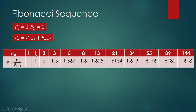For example: 1 over 1 is 1; 2 over 1 is 2; 3 over 2 is 1.5; 5 over 3 is 1.667; 8 over 5 is 1.6 — and so on. By the time you get to 144 over 89, the ratio is approximately 1.618. I will use this to produce a rectangle that manifests the golden ratio proportion.